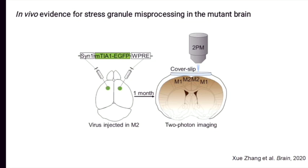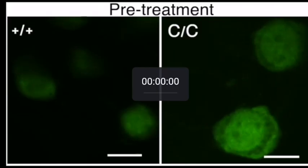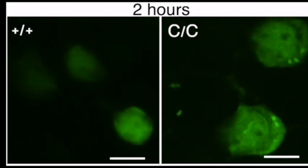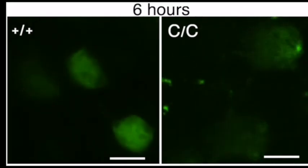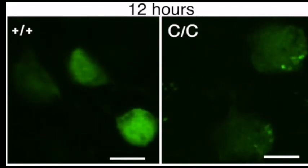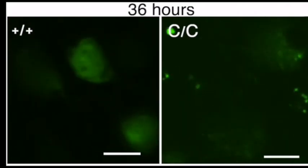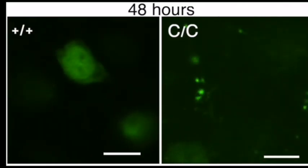Stress granule misprocessing caused by FUS mutation has been heavily studied in vitro, while in vivo evidence is lacking. Therefore, to monitor stress granule dynamics in vivo, we exploited two-photon imaging and labeled stress granules with TIA1-EGFP, because TIA1 is a stress granule marker. Using the EGFP signal, we are able to trace TIA1 puncta processing before and after stress challenge. In the mutant cortex, but not in the wild-type, more TIA1 puncta were formed, and more TIA1 moved into the granules hours after stress treatment.